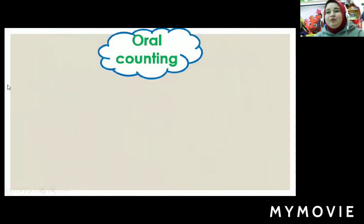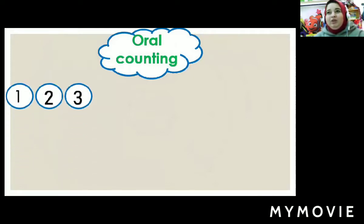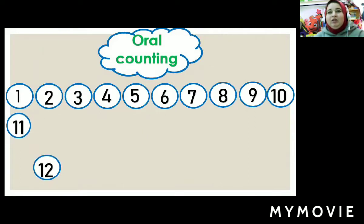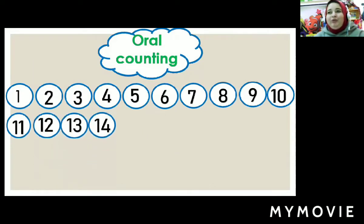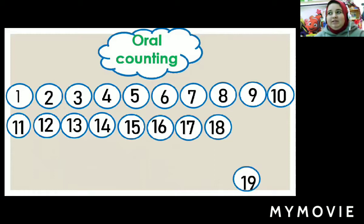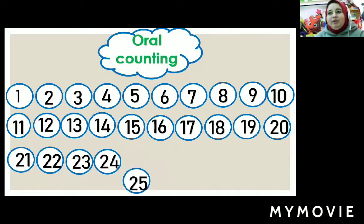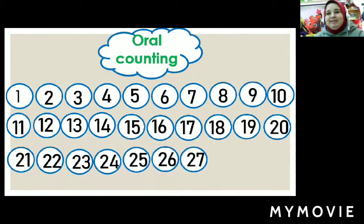Let's count from 1 to 30: 1, 2, 3, 4, 5, 6, 7, 8, 9, 10, 11, 12, 13, 14, 15, 16, 17, 18, 19, 20, 21, 22, 23, 24, 25, 26, 27, 28, 29, 30.